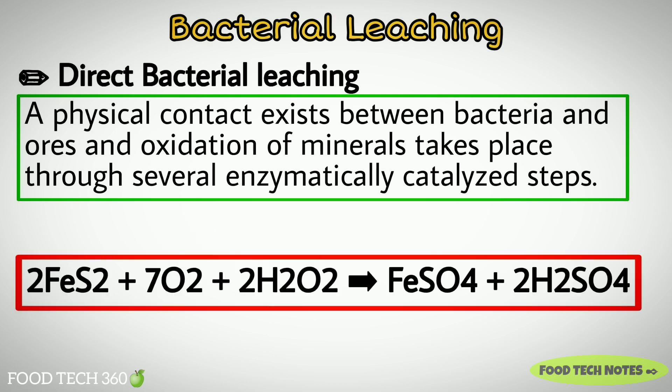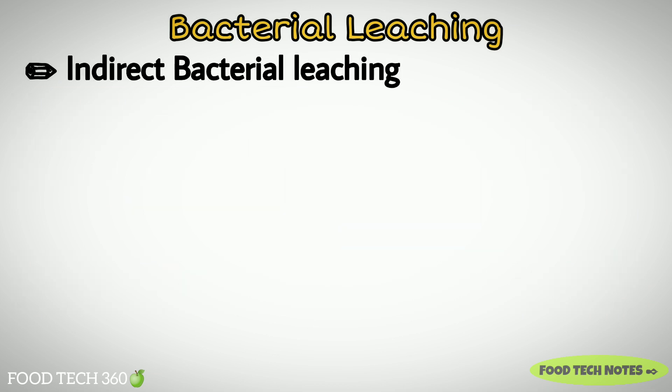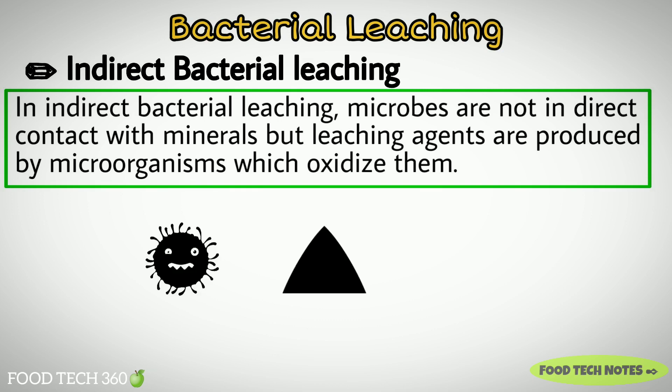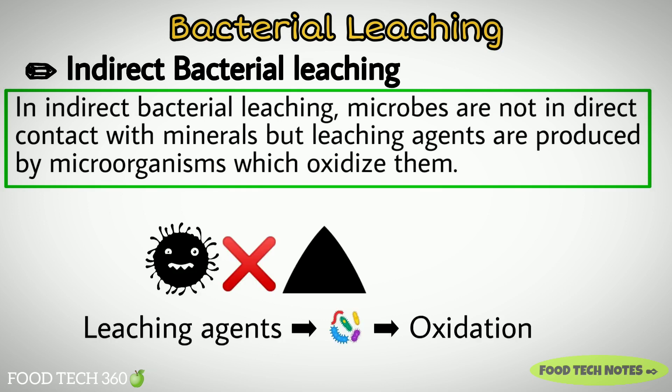For example, pyrite is oxidized to ferric sulfate by using Thiobacillus ferroxidans. In Indirect Bacterial Leaching, microbes are not in direct contact with minerals, but leaching agents are produced by microorganisms which oxidize them.